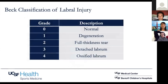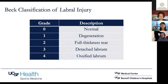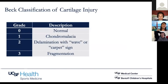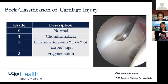We classify labral injury based on the Beck classification: grade 0 is normal, grade 1 is degenerated, grade 2 is a full thickness tear, grade 3 is detached (almost like a bucket handle tear, flopped in), and grade 4 is an ossified labrum. We also use the Beck classification of cartilage injury: grade 1 is softening or chondromalacia, grade 2 is delamination (as the labral injury propagates into cartilage you get a wave or carpet sign where fluid tracks and delaminates the cartilage), and grade 3 is cartilage fragmentation — more end-stage changes.